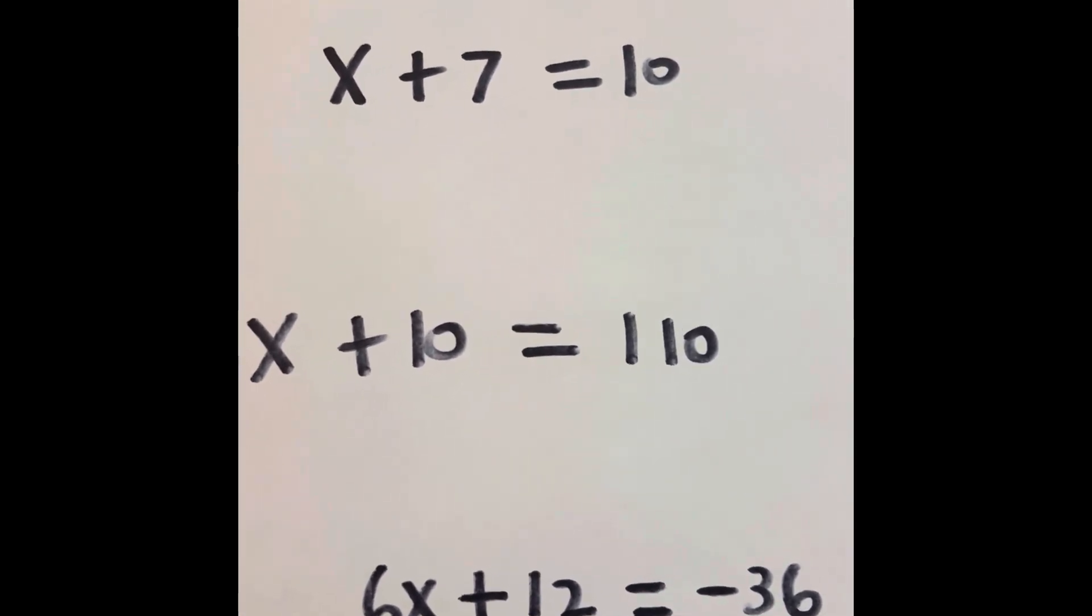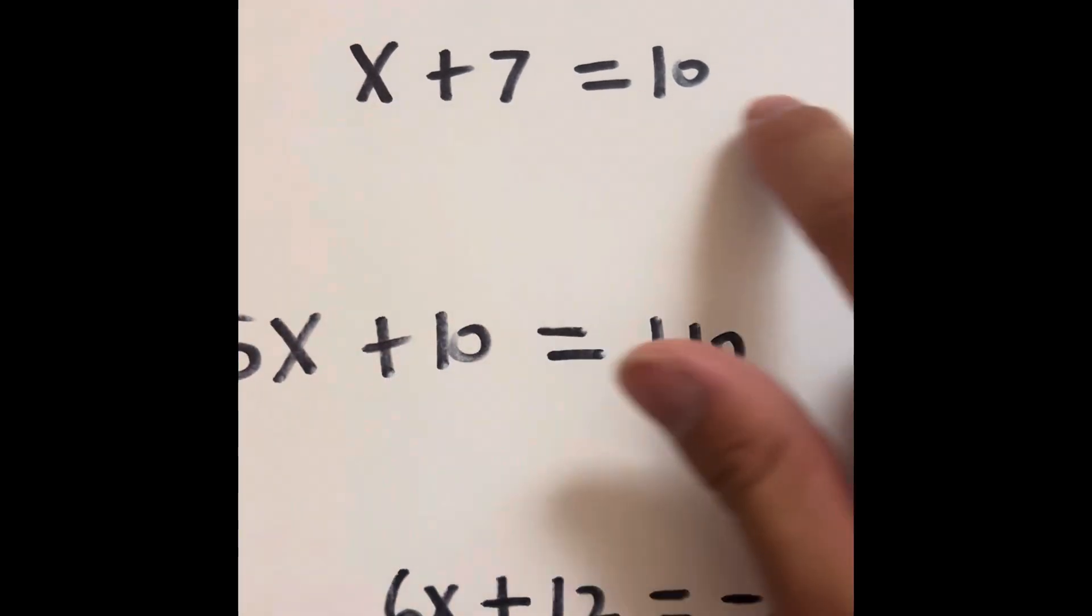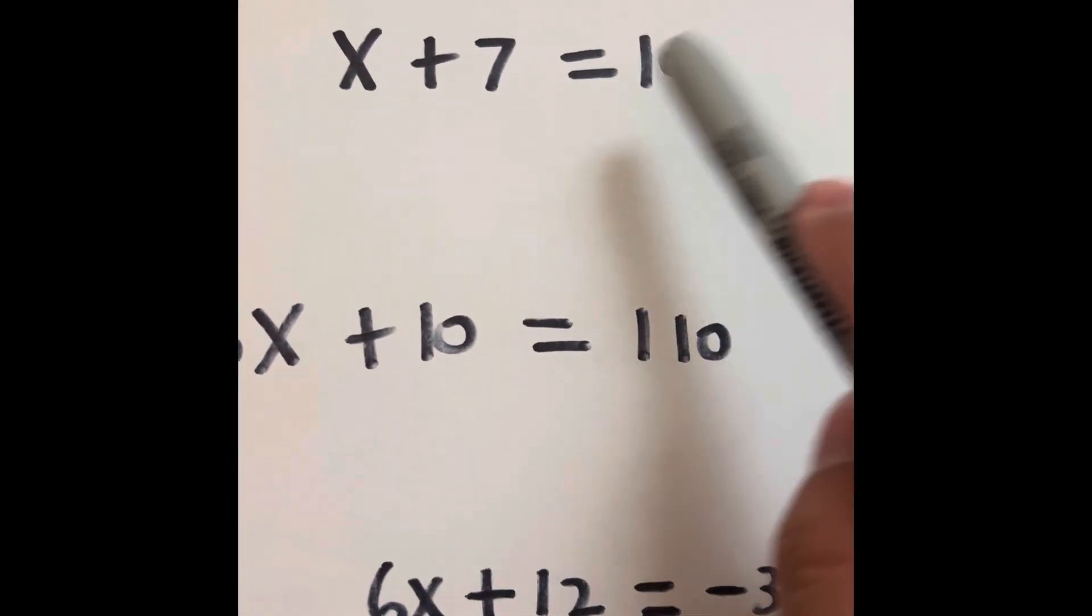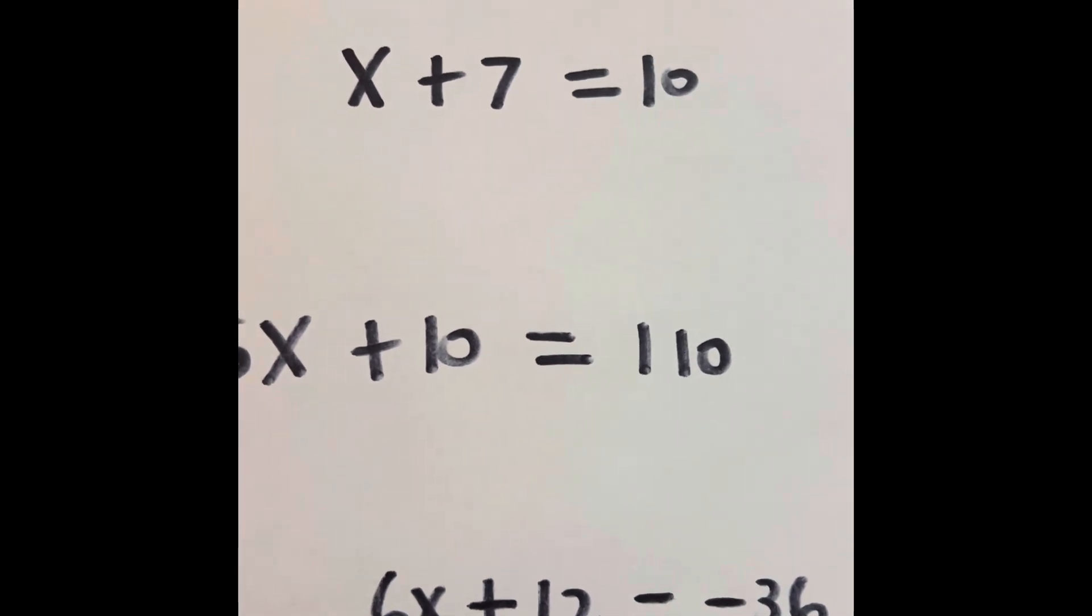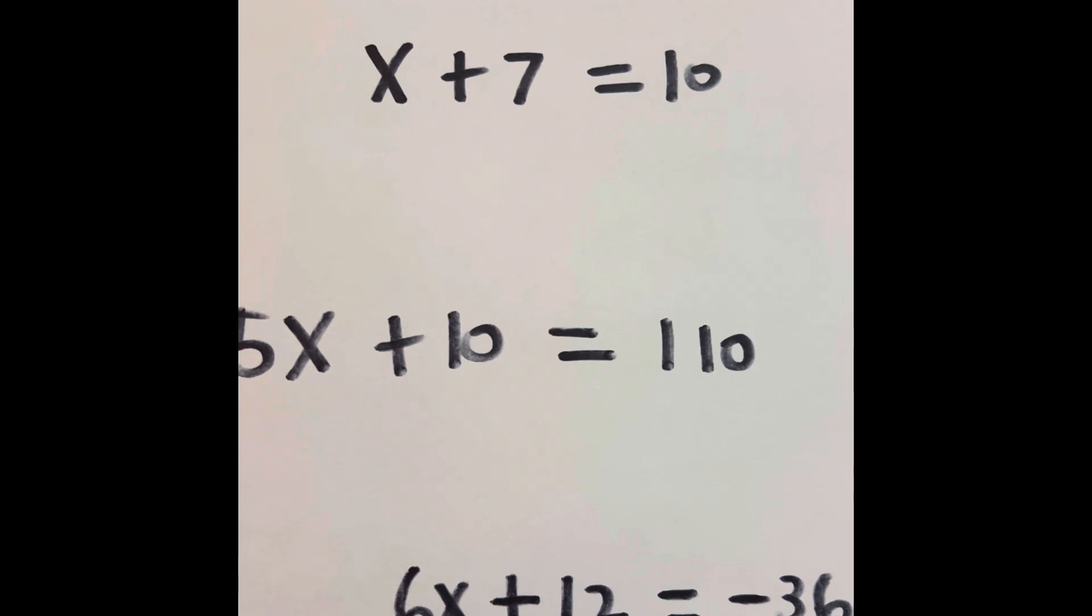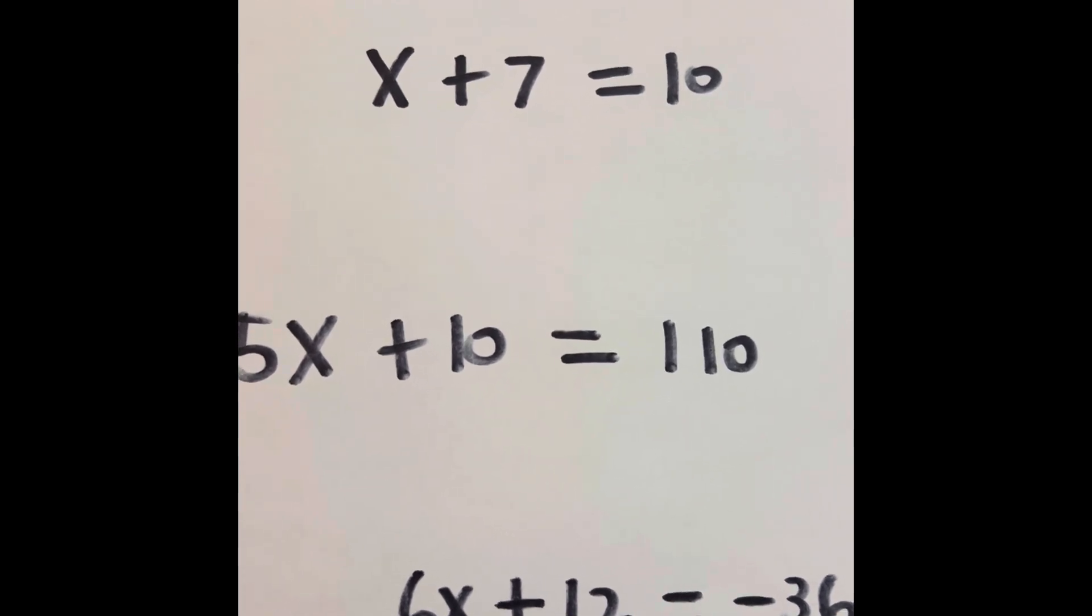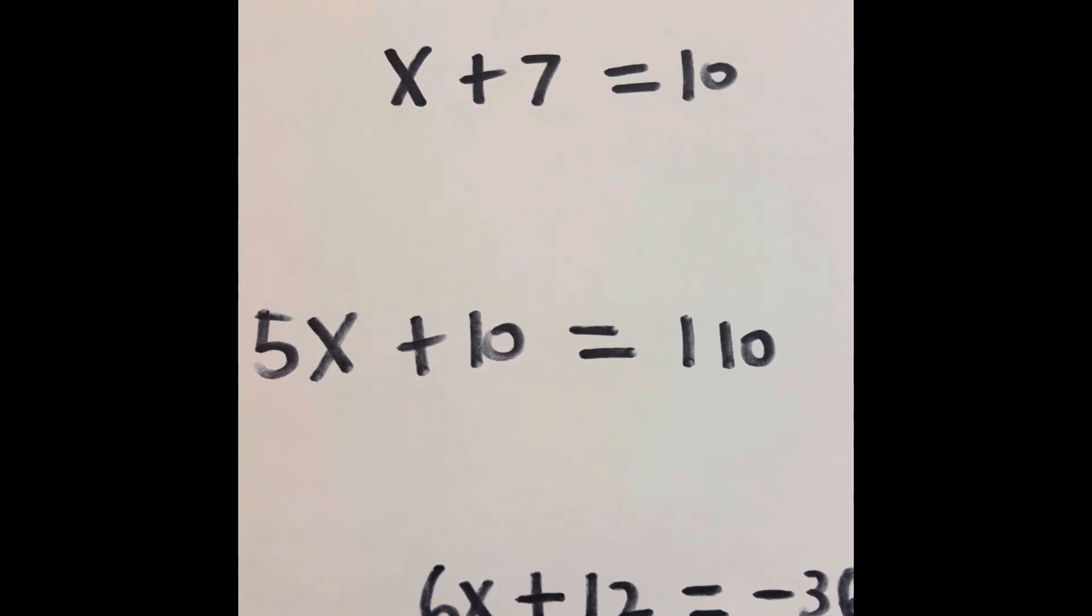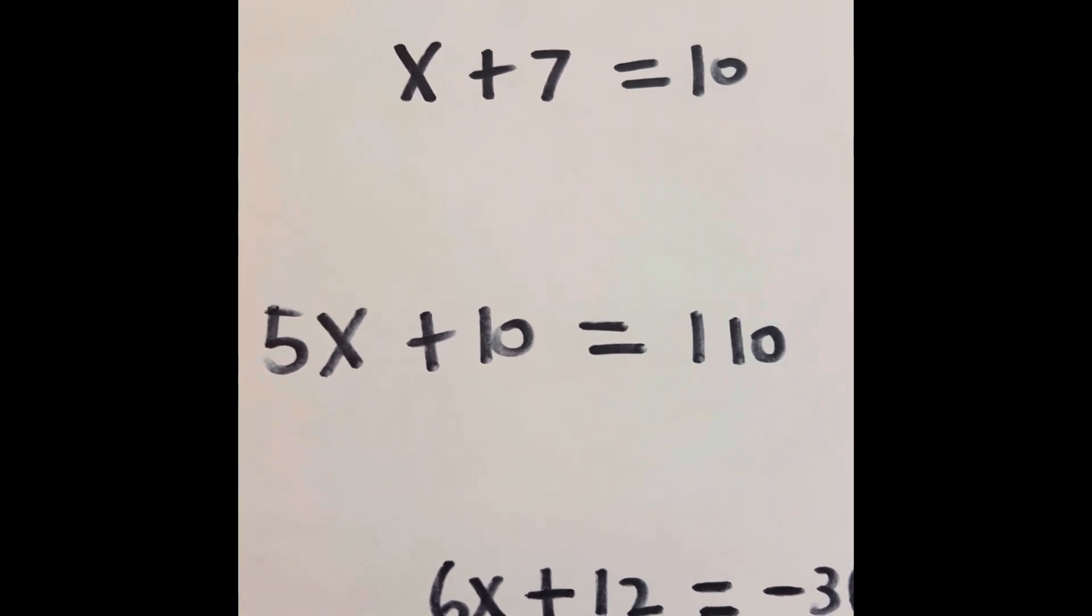Think of it this way: assuming the problem is already solved out, what number plus 7 equals 10? What we have to do is reverse the problem and find the missing number by doing the opposite of what the problem intentionally said.